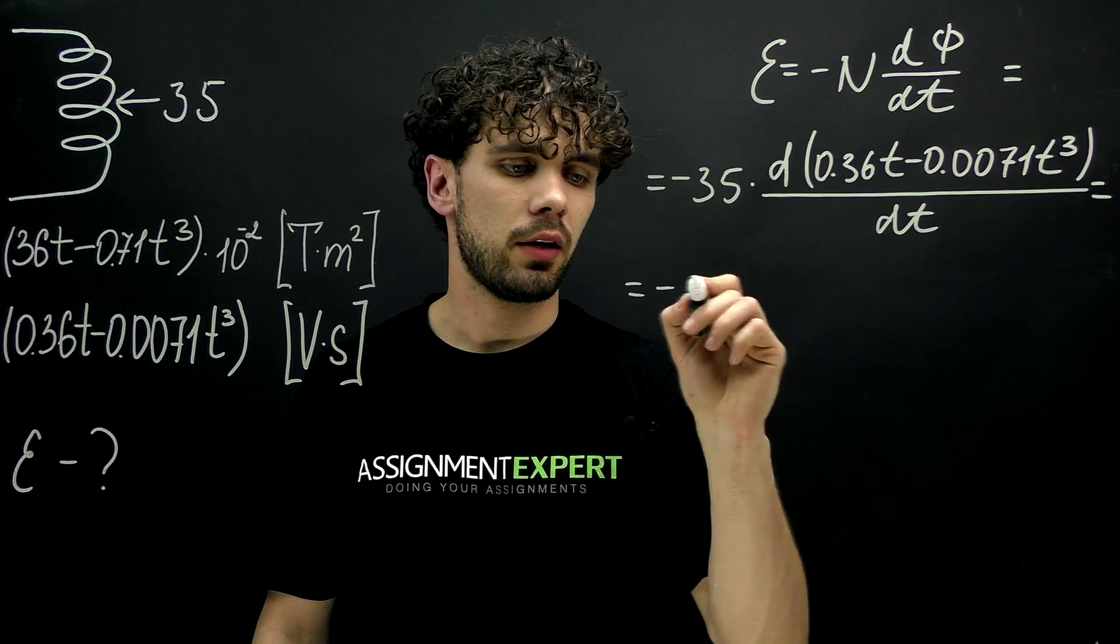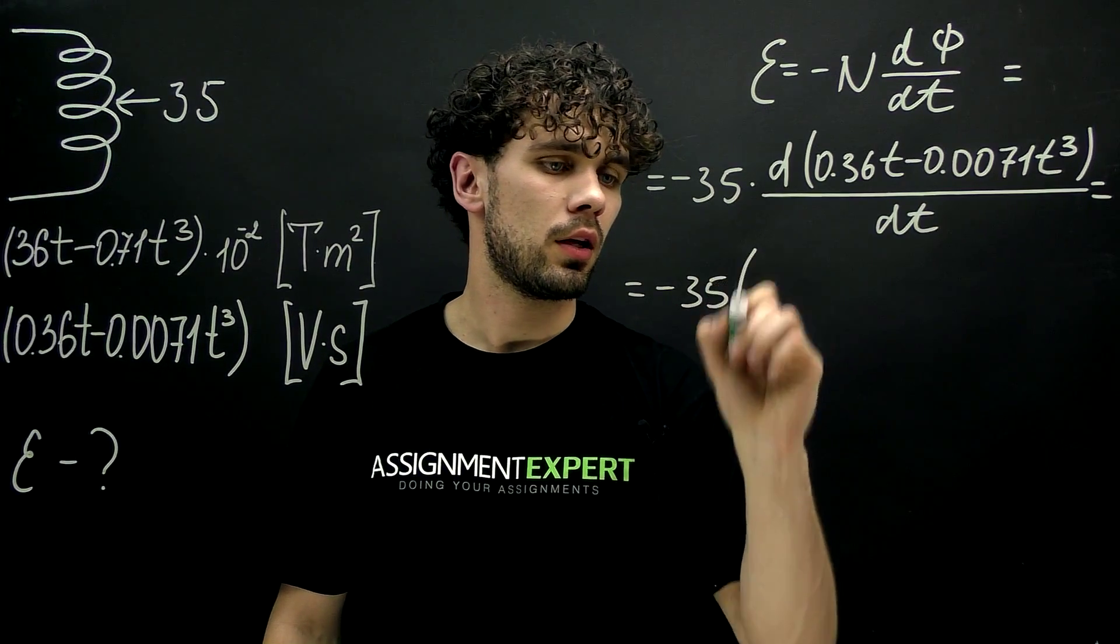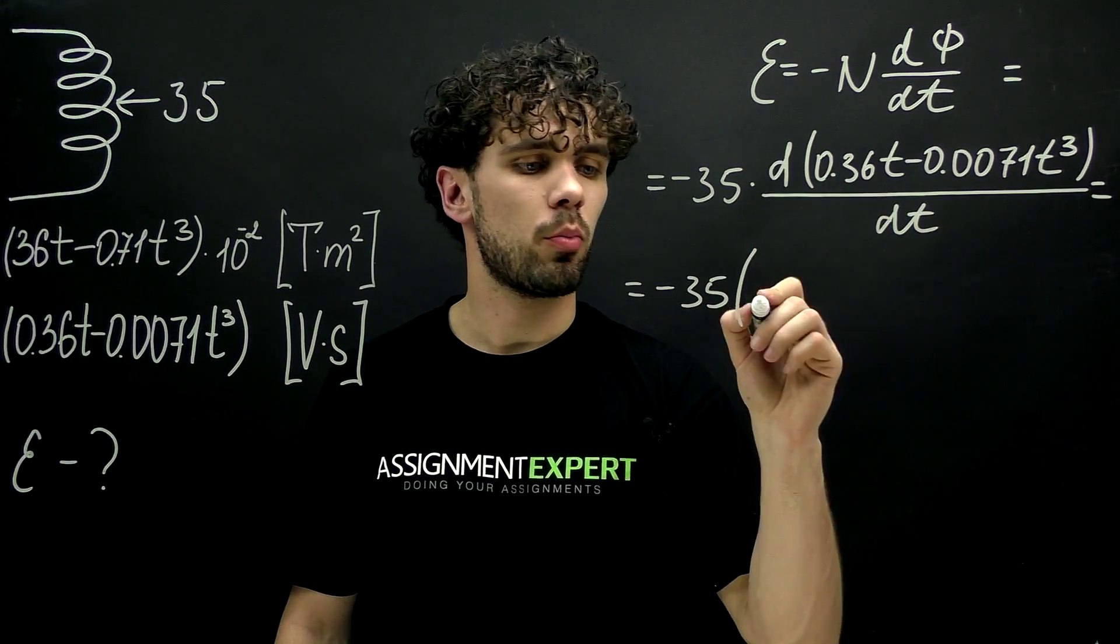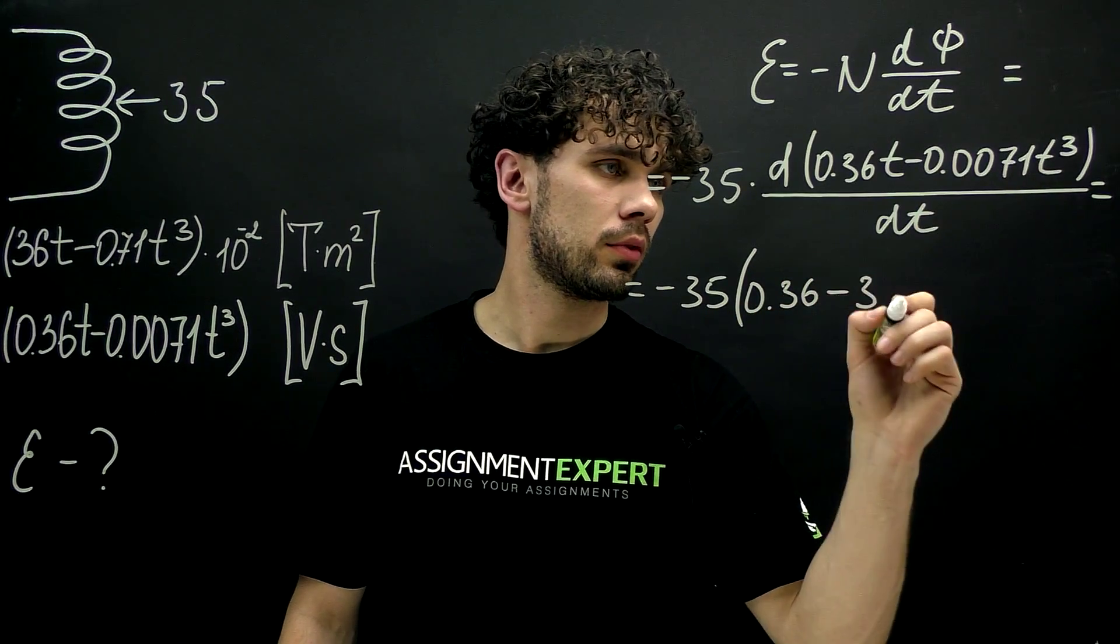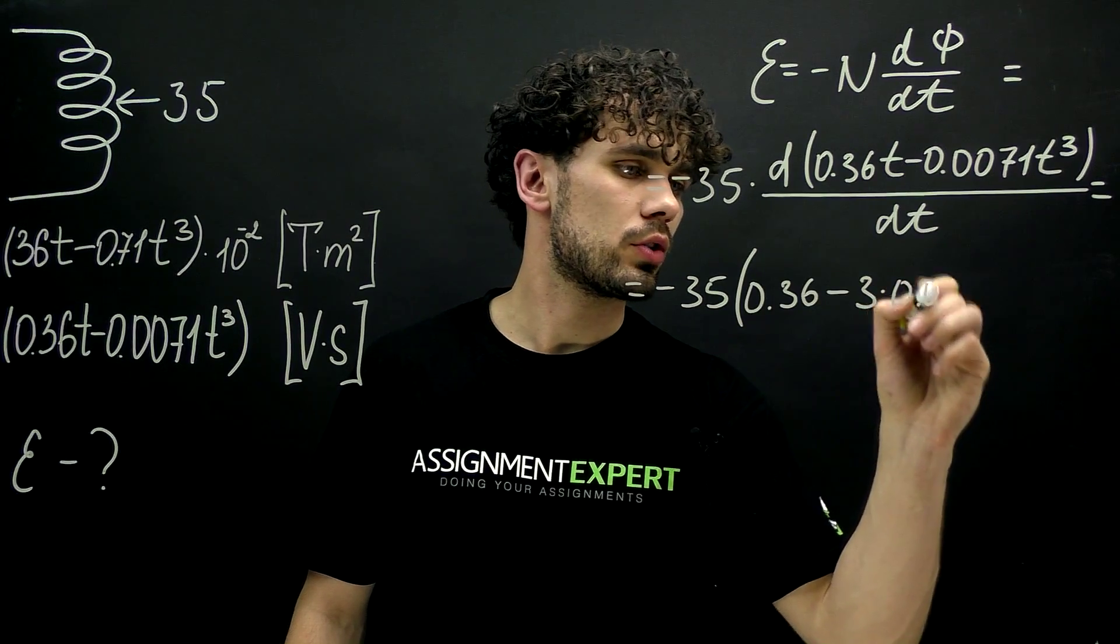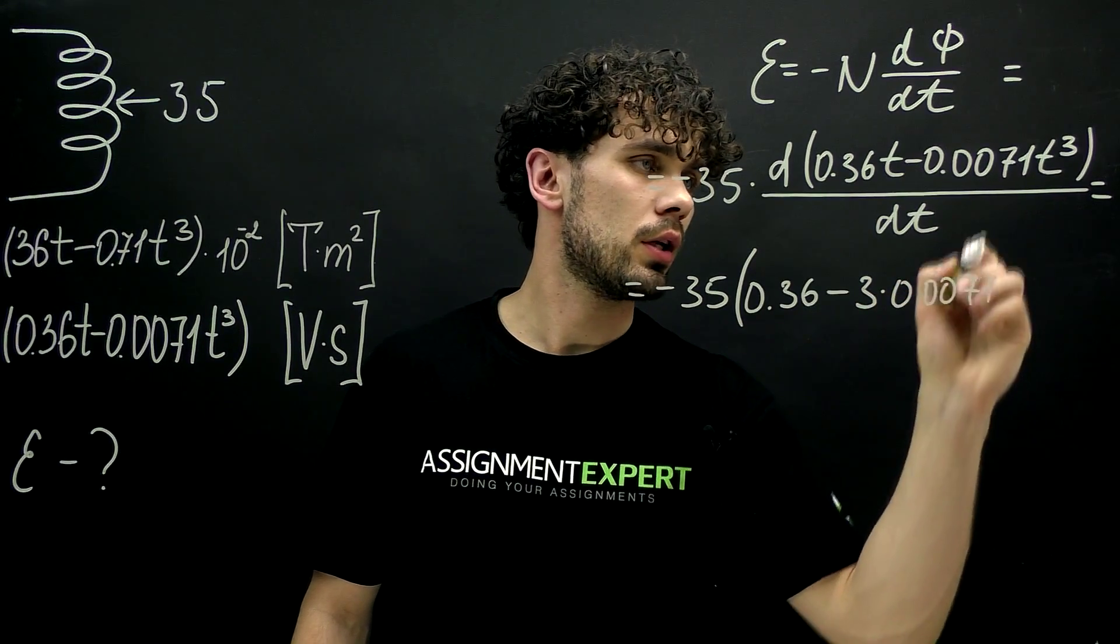And we get negative 35 and in braces we get 0.36 minus 3 times 0.0071 t squared.